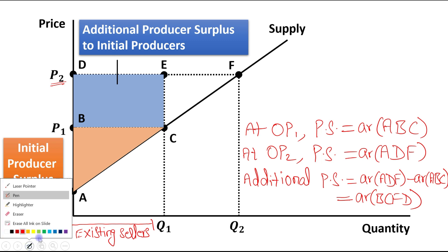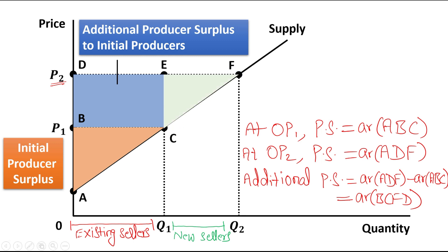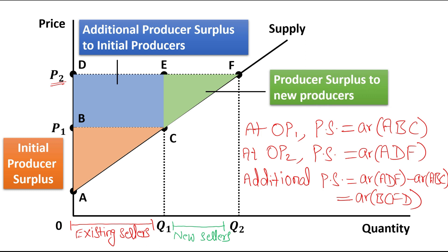Now let's talk about the second portion. This portion is for new sellers. Some new sellers will enter the market because they are willing to produce at the higher price, which will increase the quantity from Q1 to Q2. So the additional producer surplus for these newcomers will be denoted by area C, E, F — that means this portion. This is the producer surplus to the new producers.